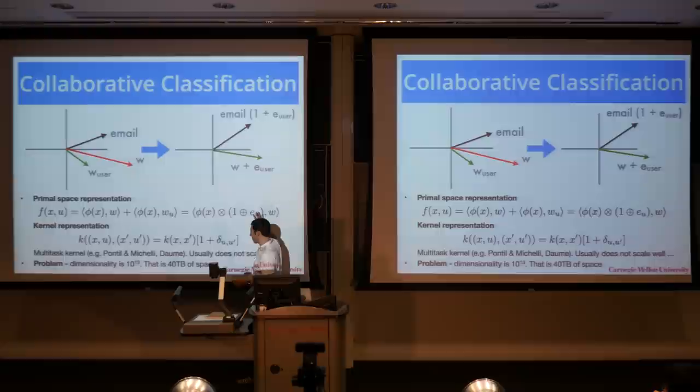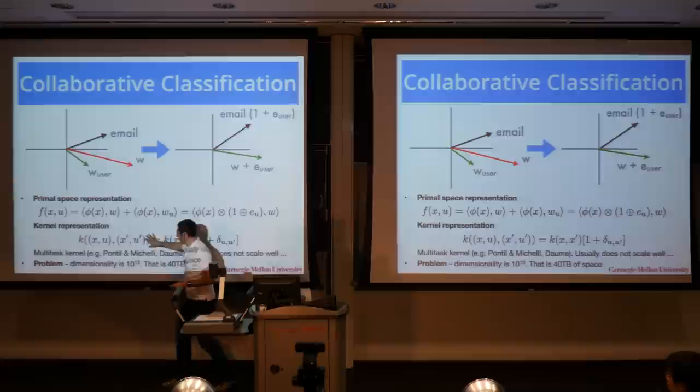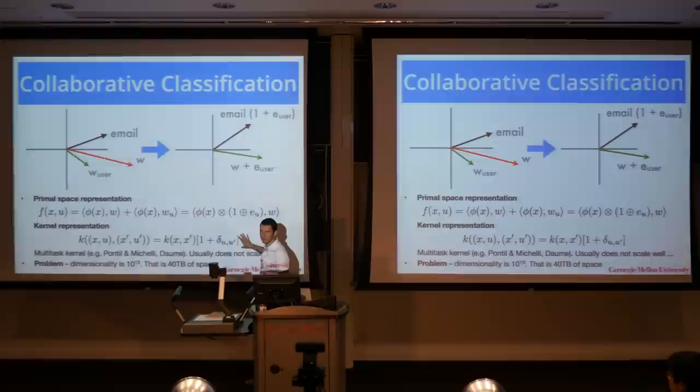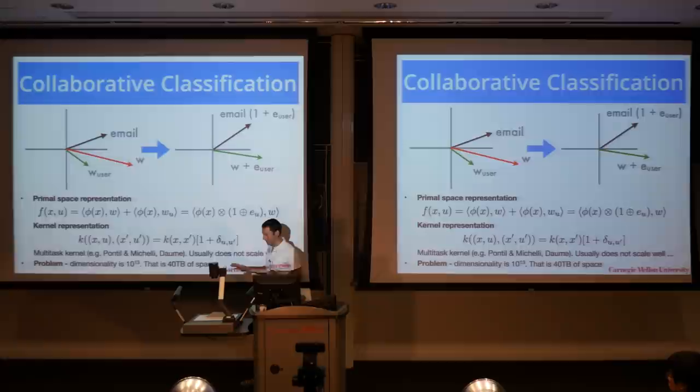By the way, if we look at the kernel associated with that, we take the inner product between document x and user u, and a different document x' and user u', we get: whenever we have the shared term, we get k(x, x'), the inner product between φ(x) and φ(x'). However, when the users also match, I get an additional increment. So it's basically twice the inner product when the users match, and otherwise simply the inner product.